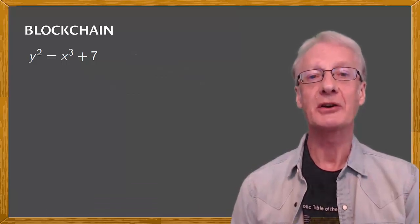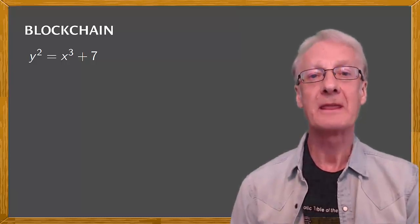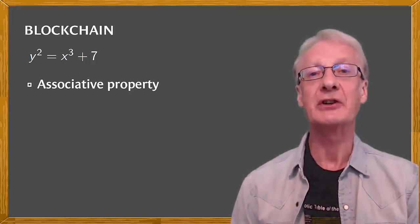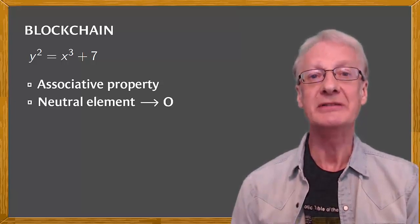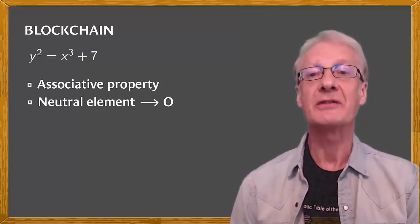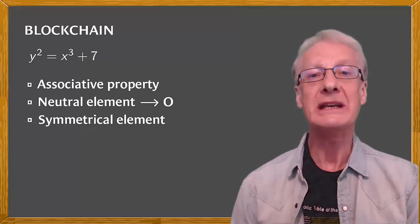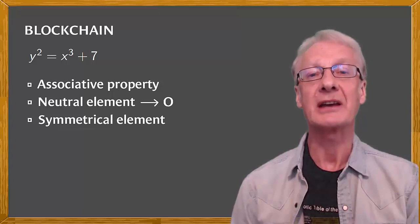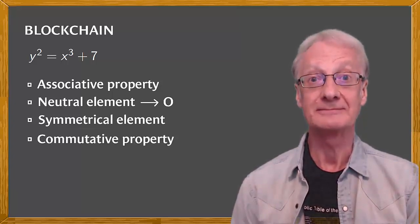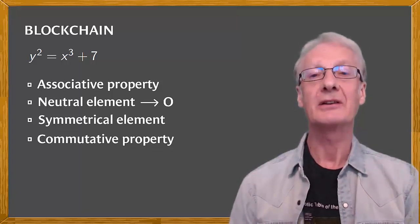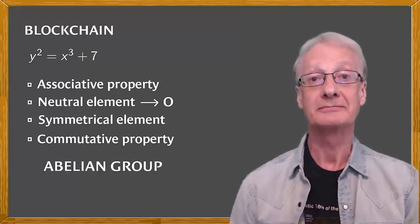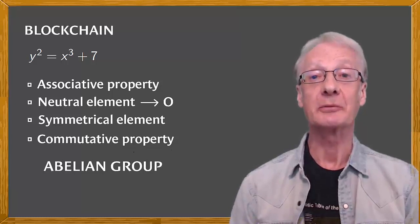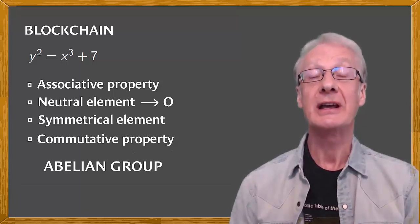The elliptic curve with this operation that we've been looking at satisfies some important properties. The associative property, the existence of a neutral element and a point at infinity, and the existence of a symmetrical element, a point P that's symmetrical with respect to the X axis. It also satisfies the commutative property. We can say that the elliptic curve with the sum operation has the structure of an abelian group. We'll talk about abelian groups and other important algebraic structures in another video.